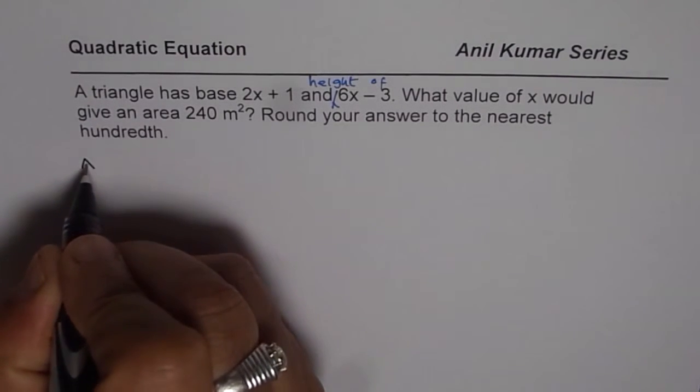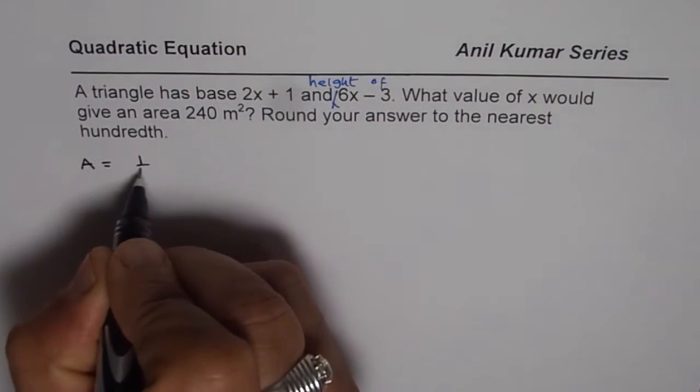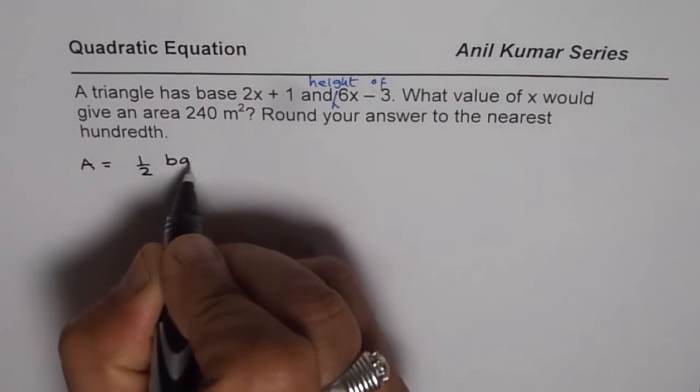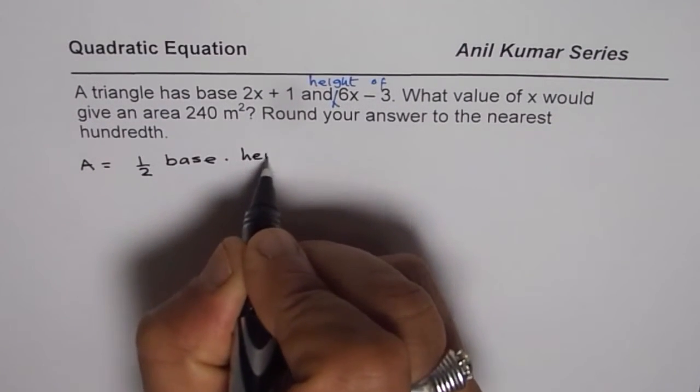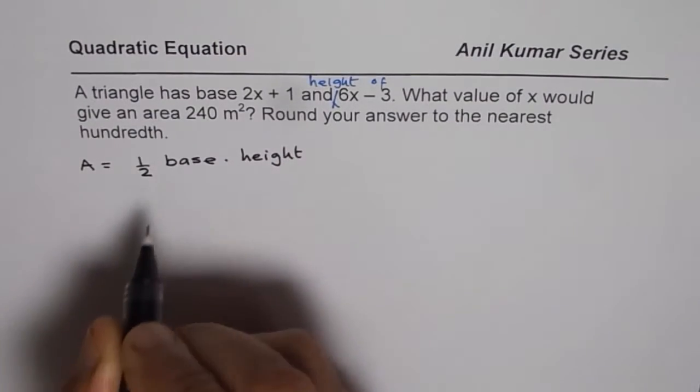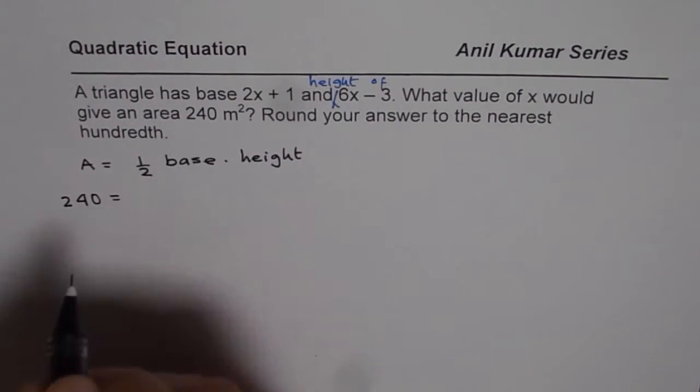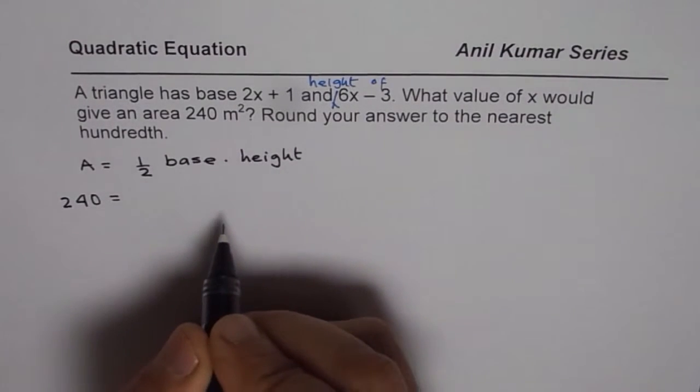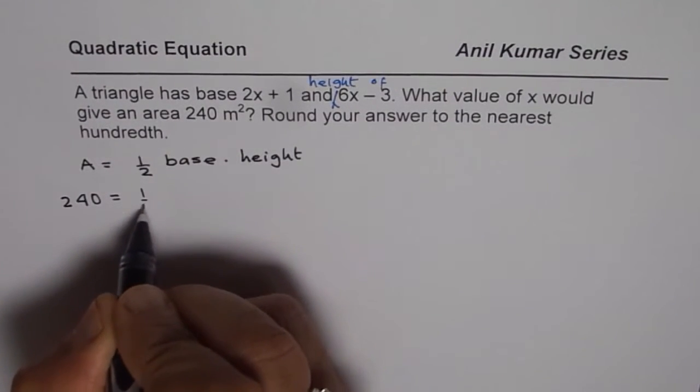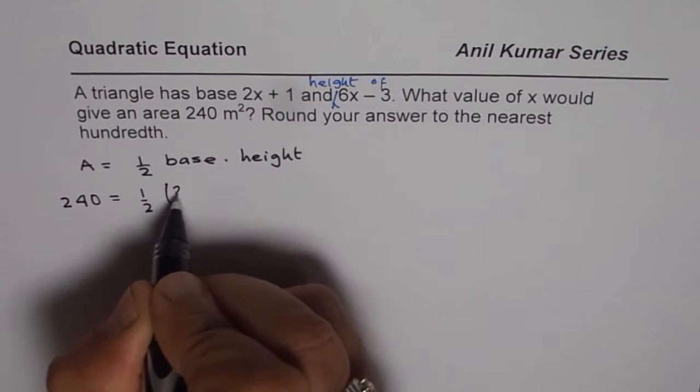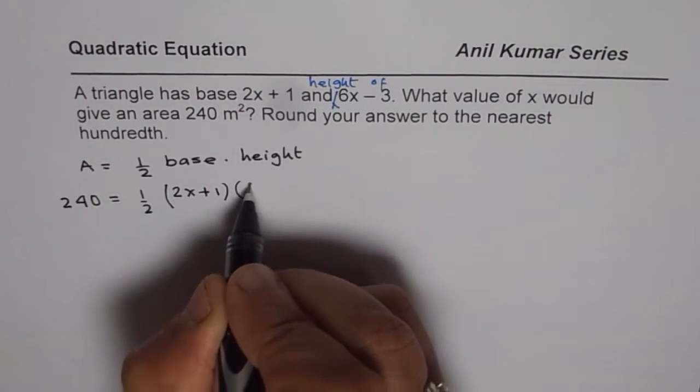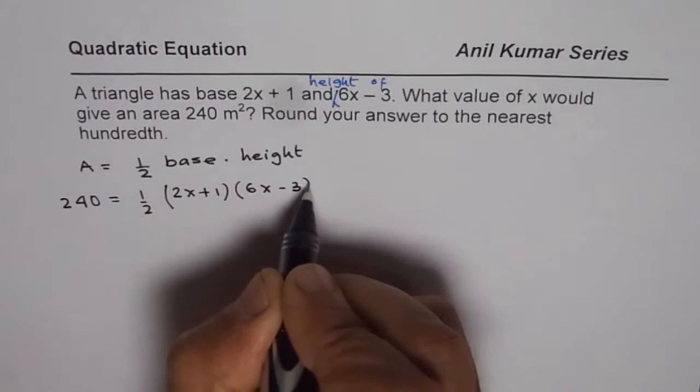As you know, area of a triangle is half base times height. We are given area as 240, so we can write 240 in meters squared. Half of base is 2x plus 1 and height is 6x minus 3.